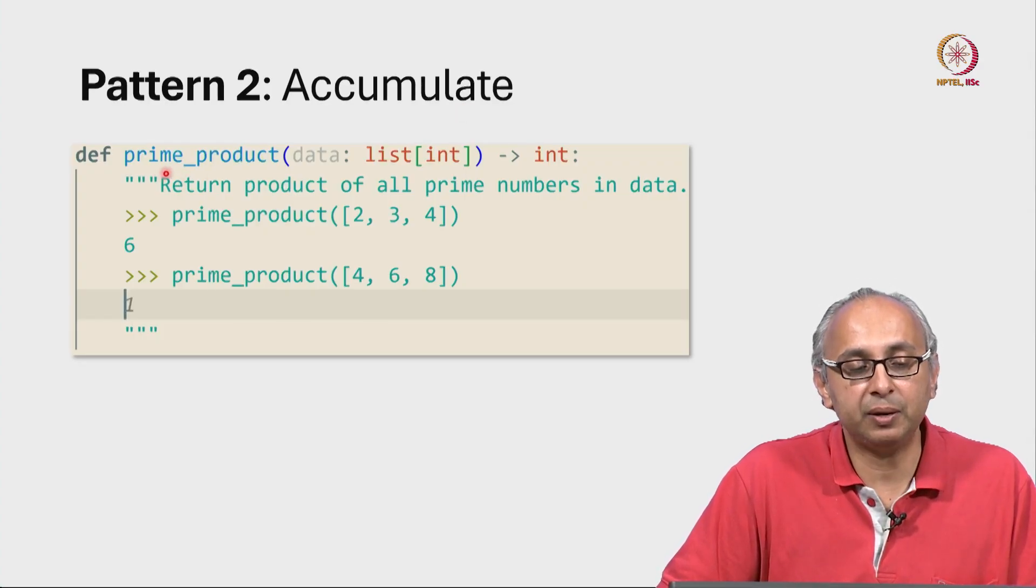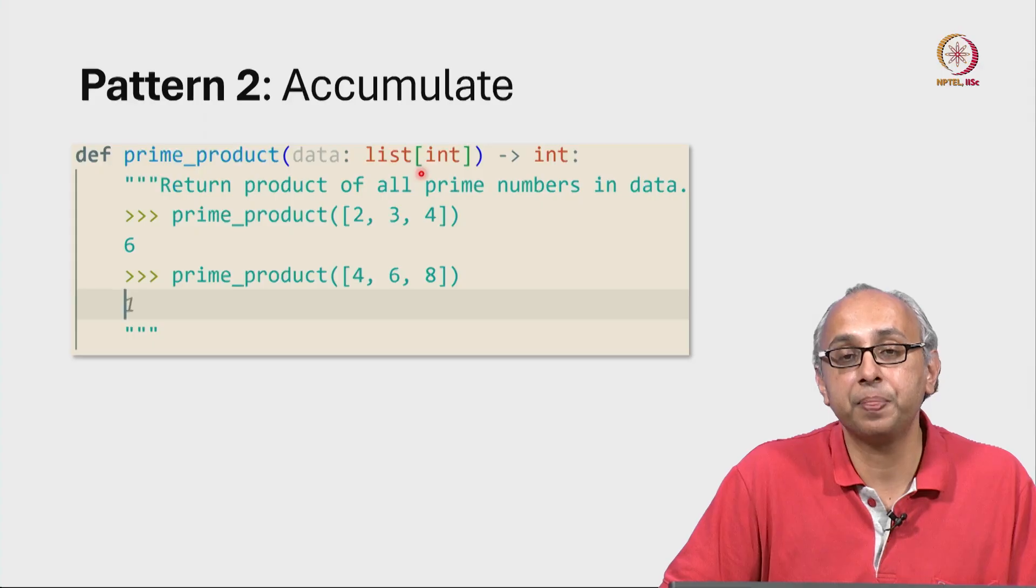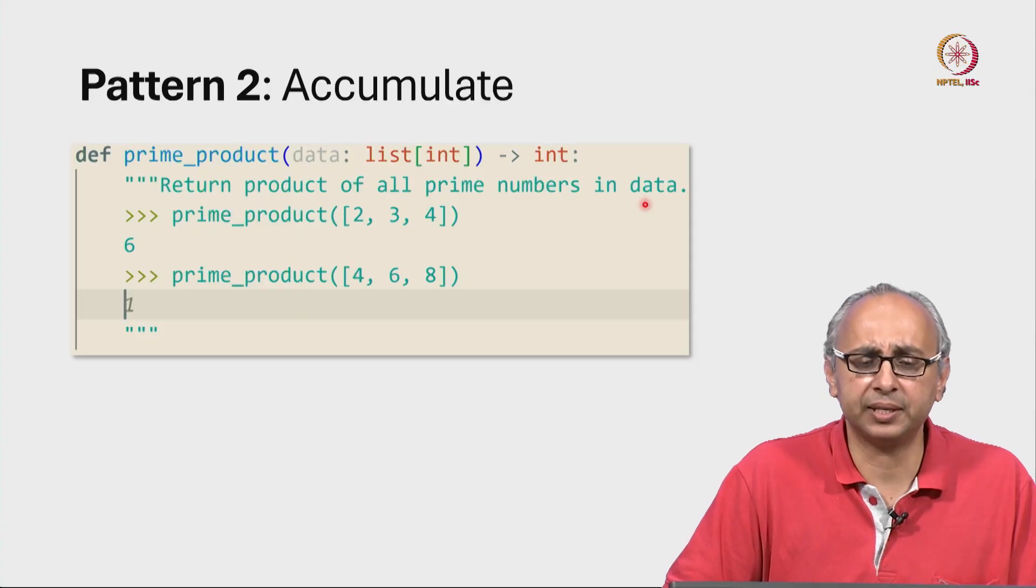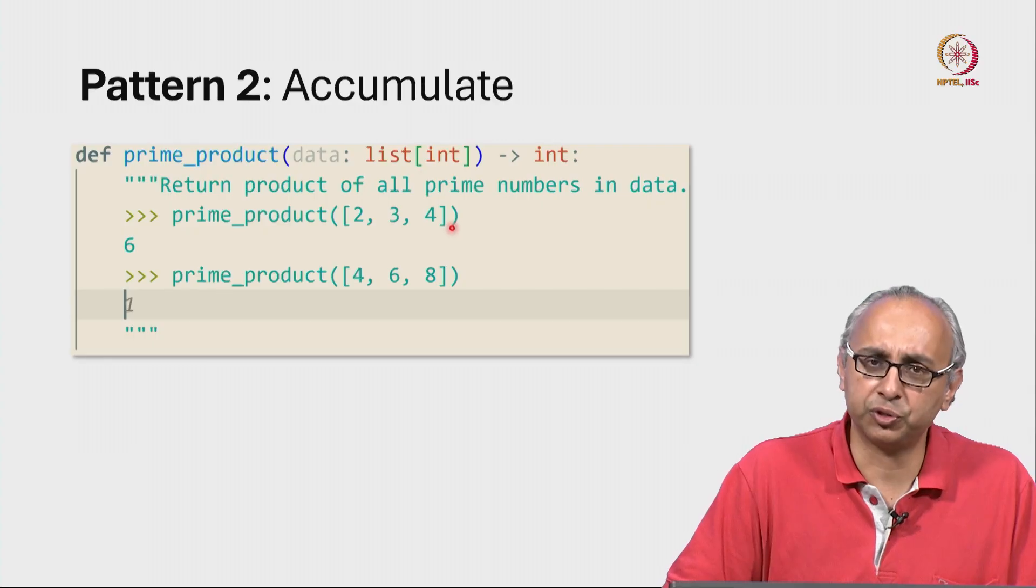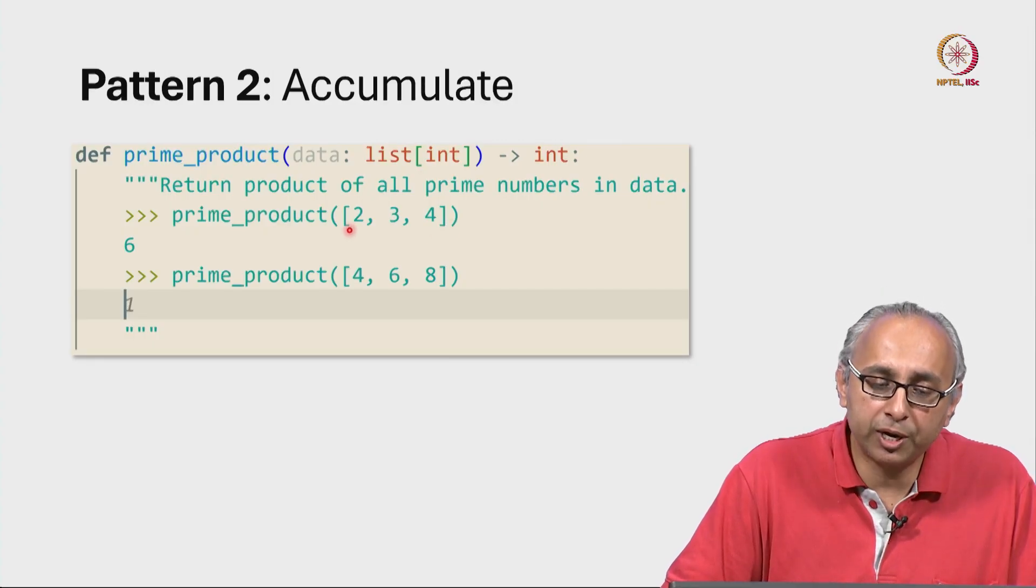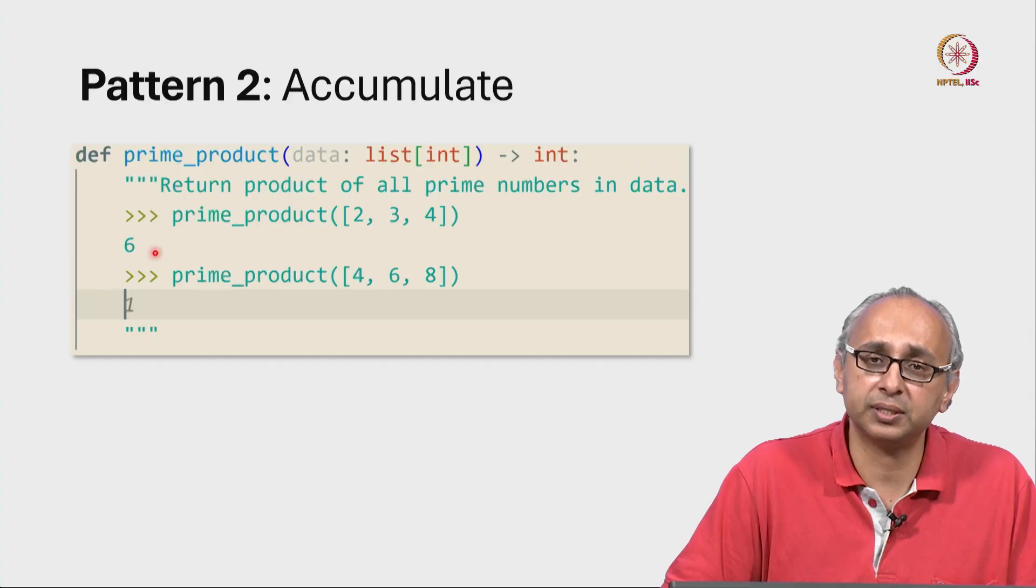So in this case, let's say we are given a list of integers, and we want to calculate the product of all the prime numbers in this list. As an example, if I give you the list 2, 3, 4, you know that 2 and 3 are prime numbers, and 4 is not a prime number. So the product of all the prime numbers in this list is 2 times 3, which is 6.